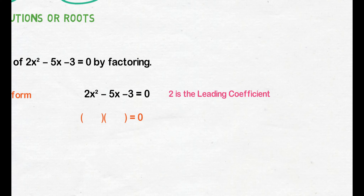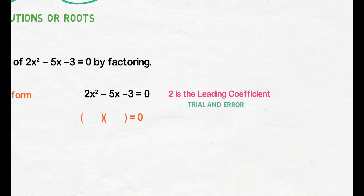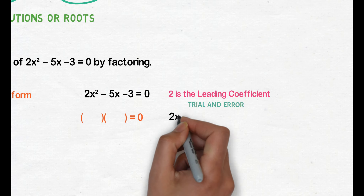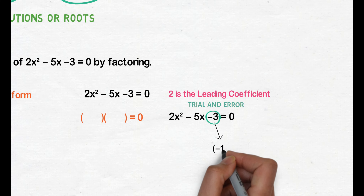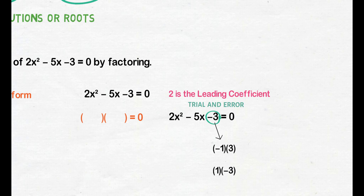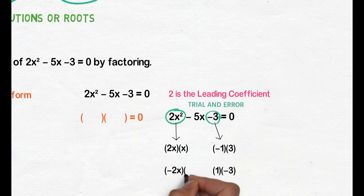Sa ganitong example na kung saan ang leading coefficient ay hindi 1, gagamit tayo ng method na tinatawag na trial and error. Unlike sa example number 1, dito sa example number 2 kailangan natin i-test lahat ng combination ng mga factors hanggang sa makuha natin ang original quadratic equation. So, kunin natin lahat ng possible factors ng constant term na negative 3: we have negative 1 times 3 and 1 times negative 3. Next, kunin naman natin lahat ng possible factors ng quadratic term na 2x squared: we have 2x times x and negative 2x times negative x.